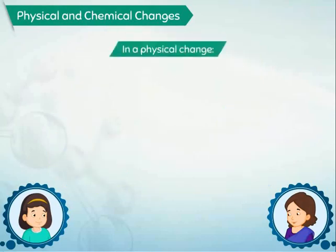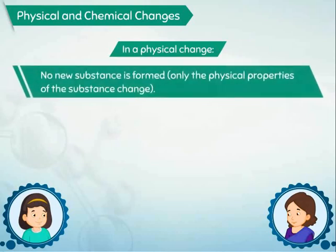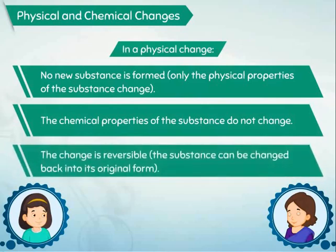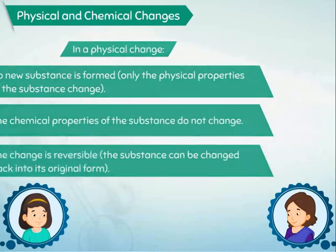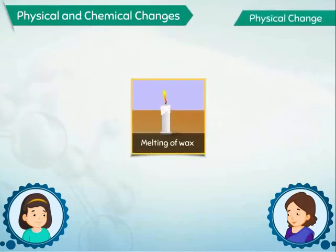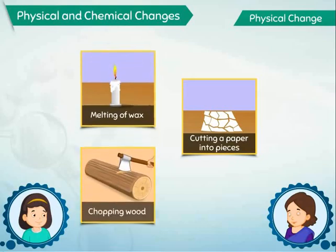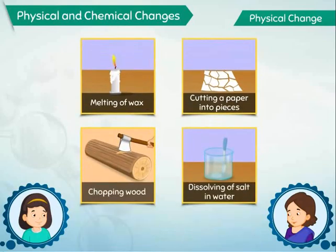So, in a physical change, no new substance is formed. The chemical properties of the substance do not change. The change is reversible — the substance can be changed back into its original form. Melting of wax, cutting a paper into pieces, chopping wood, and dissolving of salt in water are all physical changes.